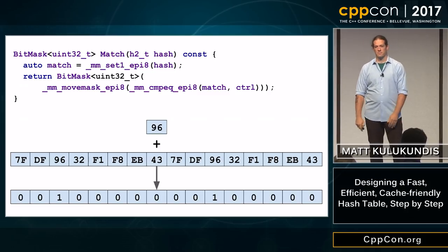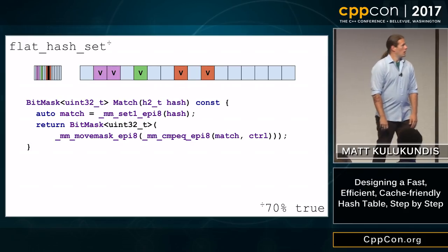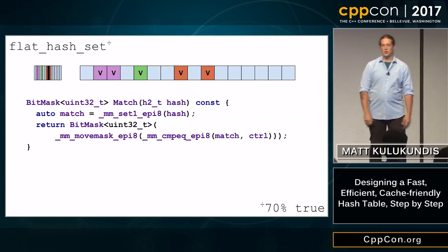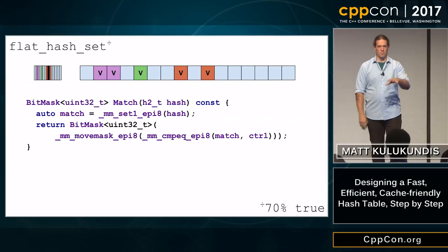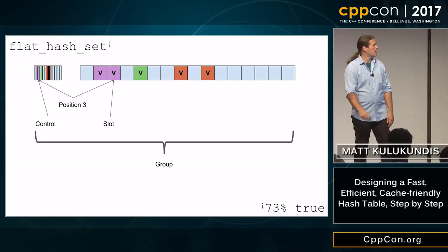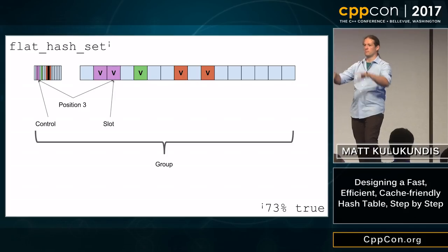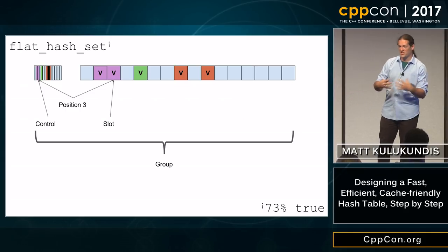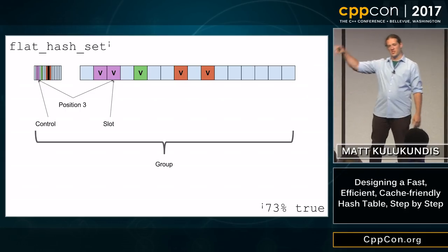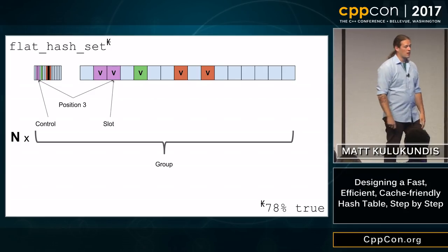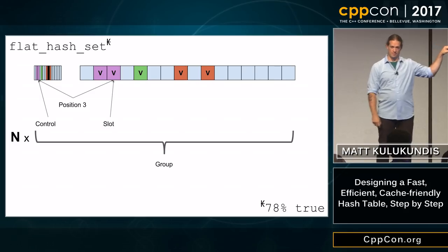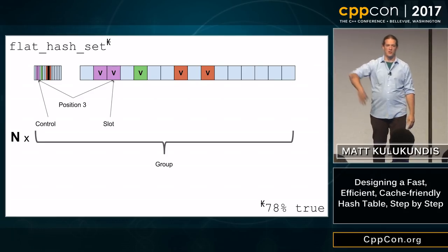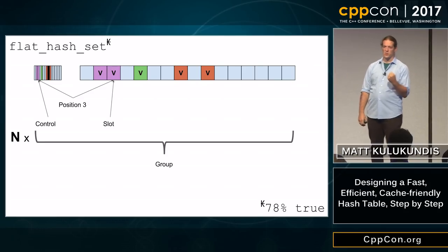It's time to name a few more things — you can always tell when things are about to get complicated because I start naming them. I'm gonna call a group of 16 control bytes and 16 slots a 'group.' Our table is gonna contain N groups. It does mean our table will have a size of N times 16, but who cares? You never really wanted an exact size from your table — what you wanted was that sweet, sweet performance.